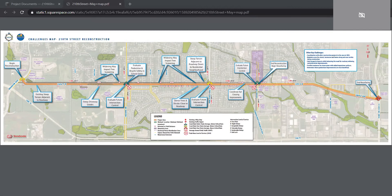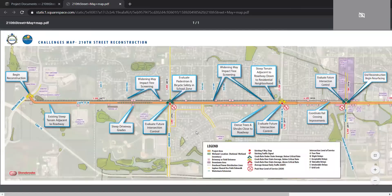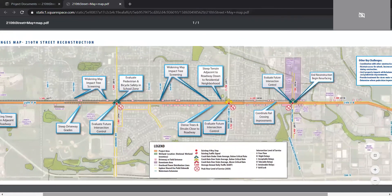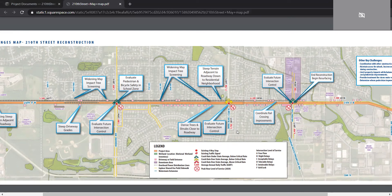We collected traffic data in early spring, and our team is currently looking at future traffic projections 20 years into the future. In looking at that, we need to evaluate what future intersection control might look like at these intersections. There is a level of service symbol here in the legend, and the level of service really means what type of delay is experienced in the AM and PM peak hours at these three main intersections based on existing volumes.